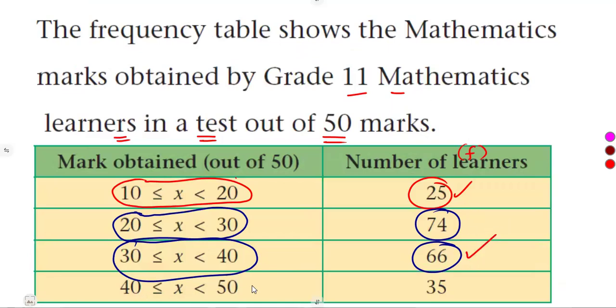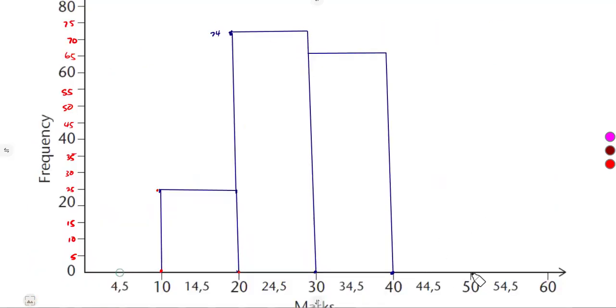Then from 40 to 50, which is 35. From 40 to 50, we take the 35 as it is there. That is 35, somewhere there. Then we can join this one to this one. So these are the basics. That was, that is going to be our histogram.